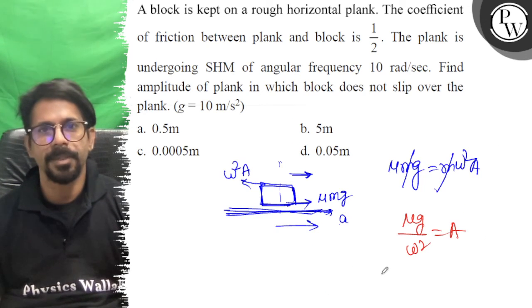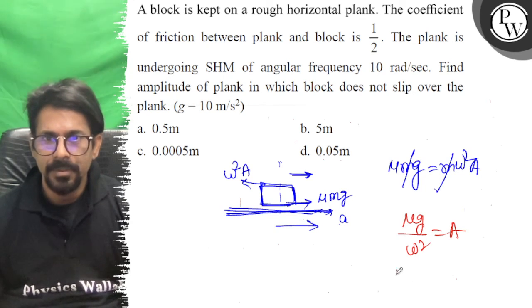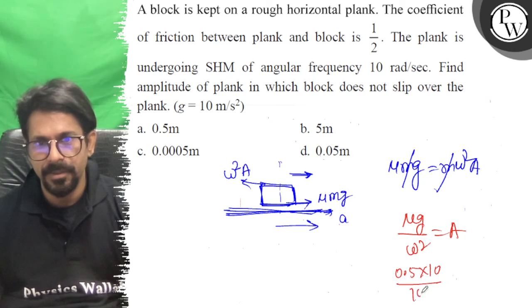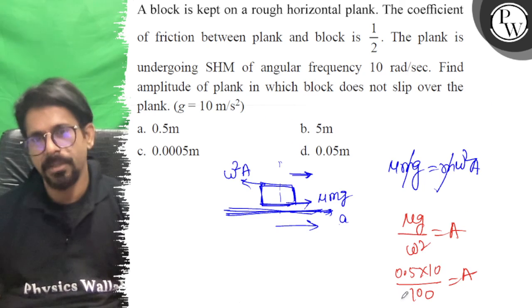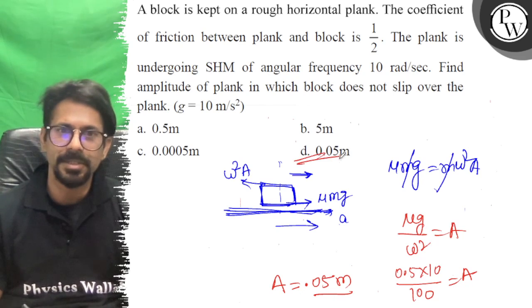Now μ is 1/2, G is 10, and angular frequency is 10. So this becomes 0.5 times 10 over 100, which equals A. The amplitude is 0.05 meters. That is the correct answer, option D is correct.